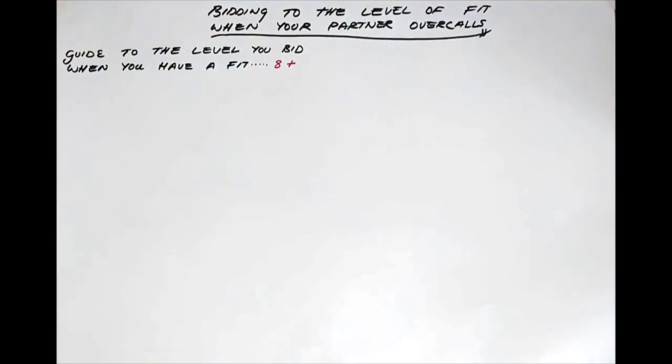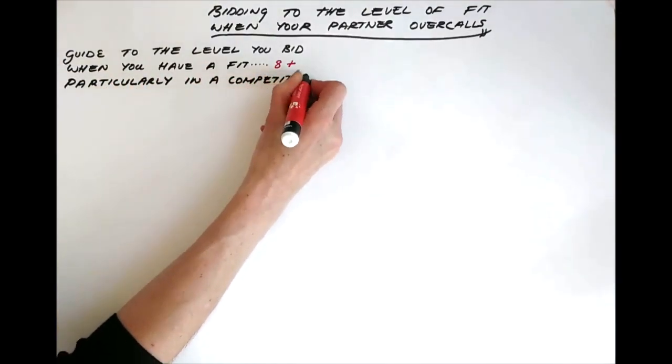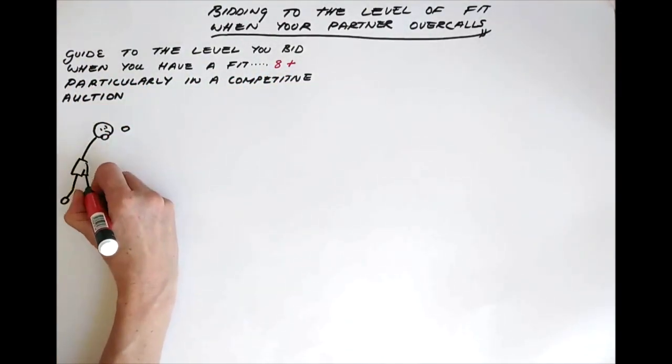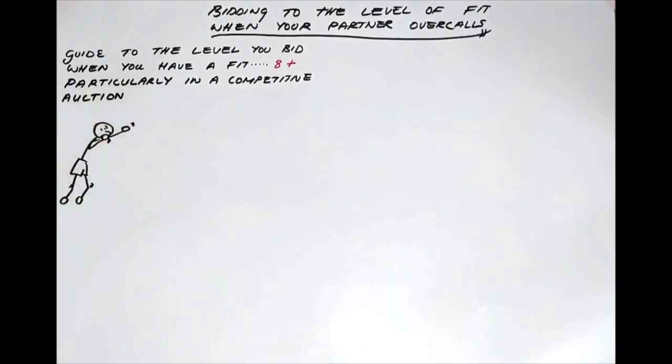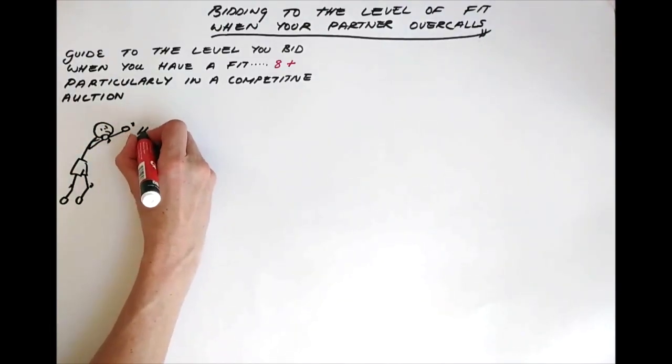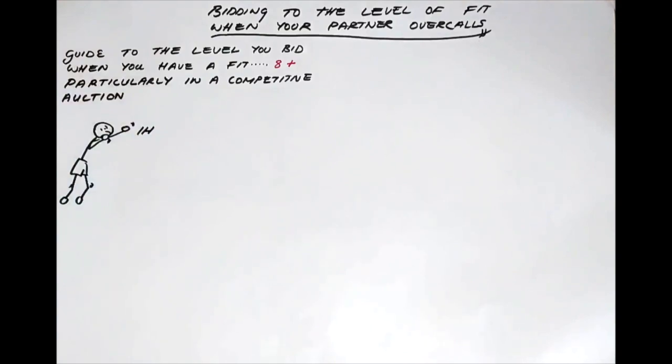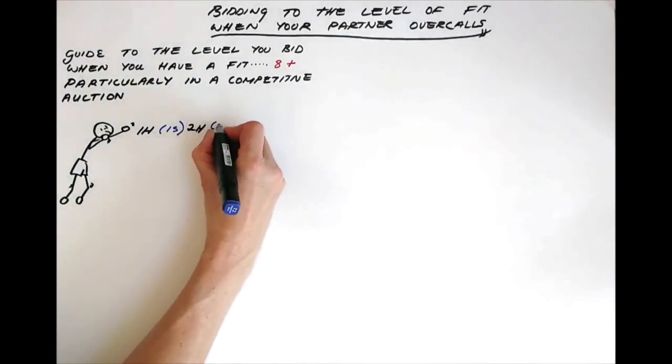And this applies particularly in a competitive auction. A competitive auction is an auction with both sides actively bidding. For example, if the opponents open a heart and your partner overcalls a spade, the responder supports with two hearts and then you come in with two spades, this is a competitive auction.